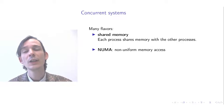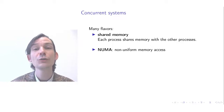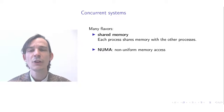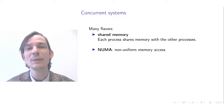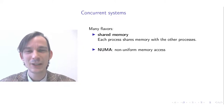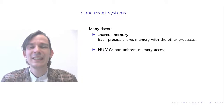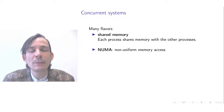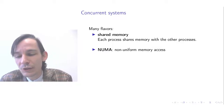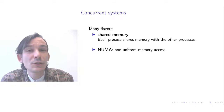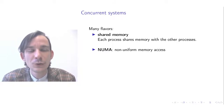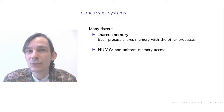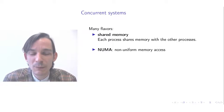Another flavor of concurrent system is non-uniform memory access (NUMA) systems. Where in shared memory systems every process has access to the same main memory, in non-uniform memory access systems some processes have access to specific memory that is local to them or that they can access more quickly than other parts of the memory.